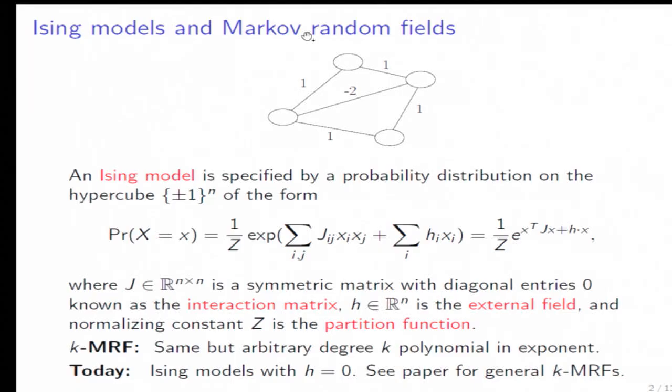So first, I should explain what's an Ising model, because we're going to approximate them. So an Ising model, it's just a very simple probability distribution on the discrete hypercube. And it's probably one of the simplest things you can think of, which actually has correlation structure, because all we do is we write the probability as e to a quadratic polynomial in the spins.